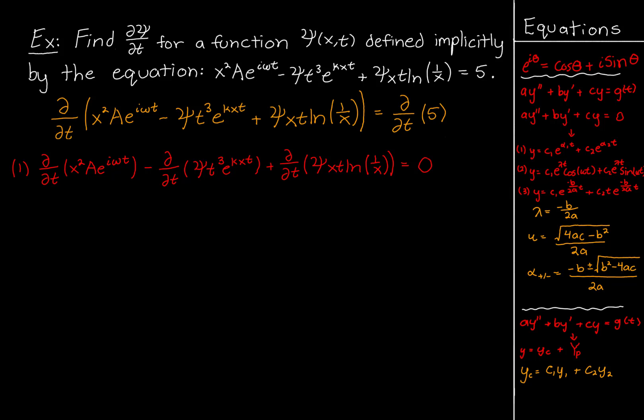I want to point out that any term containing only x is a constant, because we're taking the partial derivative of ψ with respect to t and we're looking at an instant where x is constant. So x squared a is a constant, this x is also a constant, this x is a constant, and this whole ln(1/x) is also a constant. The partial derivative of 5 is zero, which is why we have zero on the right side.